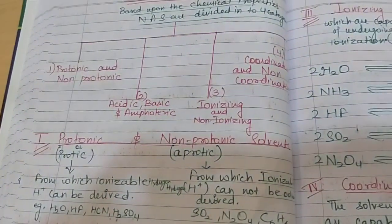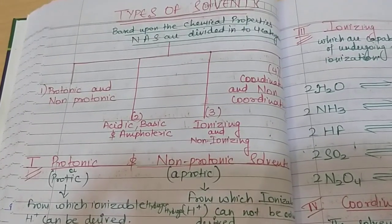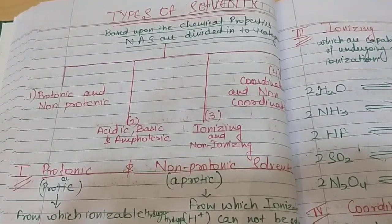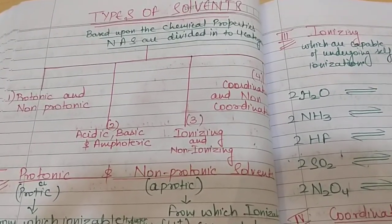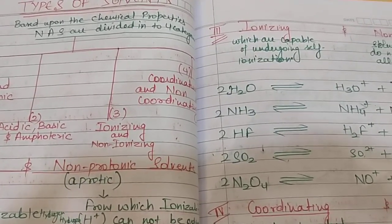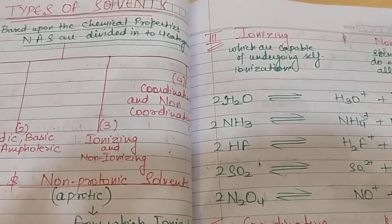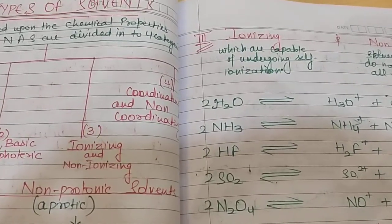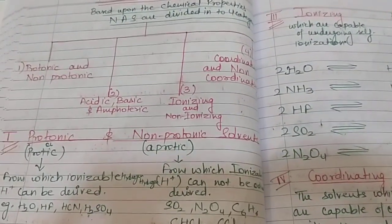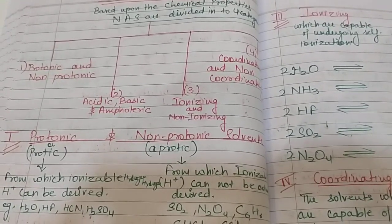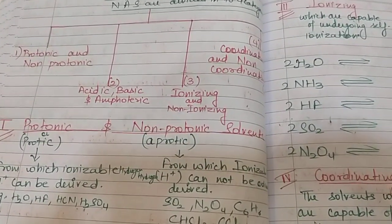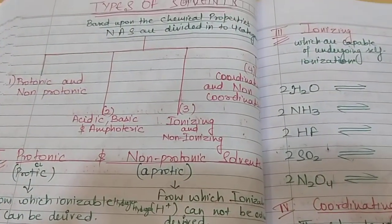So these are the four categories into which solvents have been divided. The first category has two subcategories: protonic and non-protonic. The second category has three subcategories: acidic, basic, and amphoteric. The third category has two subcategories: ionizing and non-ionizing. The fourth category is coordinating and non-coordinating. Given any solvent, you should be able to determine by looking at its formula which category it belongs to — whether it is protonic or non-protonic, acidic, basic, or amphoteric.